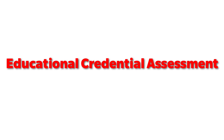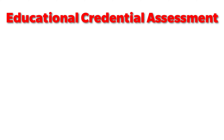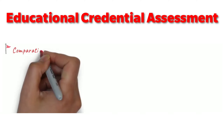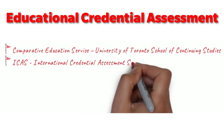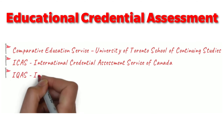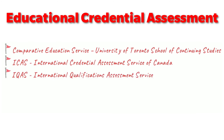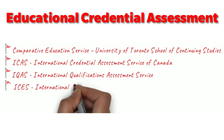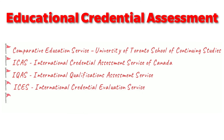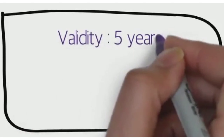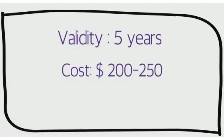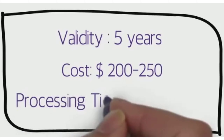Let's start with ECA. ECA is a report evaluated by an independent company to make sure your foreign degree or certificate is legit and equal to a Canadian one. A few independent companies that evaluate your degree are: Comparative Education Services, ICAS, IQAS, ICES, and World Education Services, also known as WES. People mostly use WES, which is the fastest and cheapest. The validity of this report is 5 years, the cost is around 200 to 250 Canadian dollars, and the approximate processing time is 1 to 4 months.